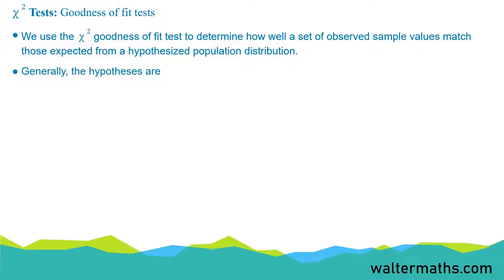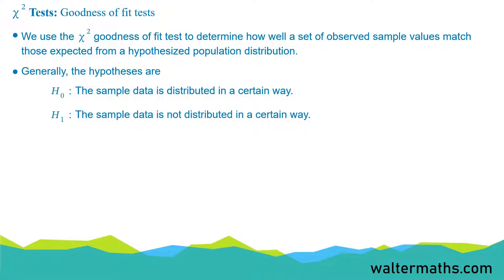Generally, the hypotheses are: for the null hypothesis, that the sample data is distributed in a certain way, and for the alternative hypothesis, that the sample data is not distributed in a certain way.